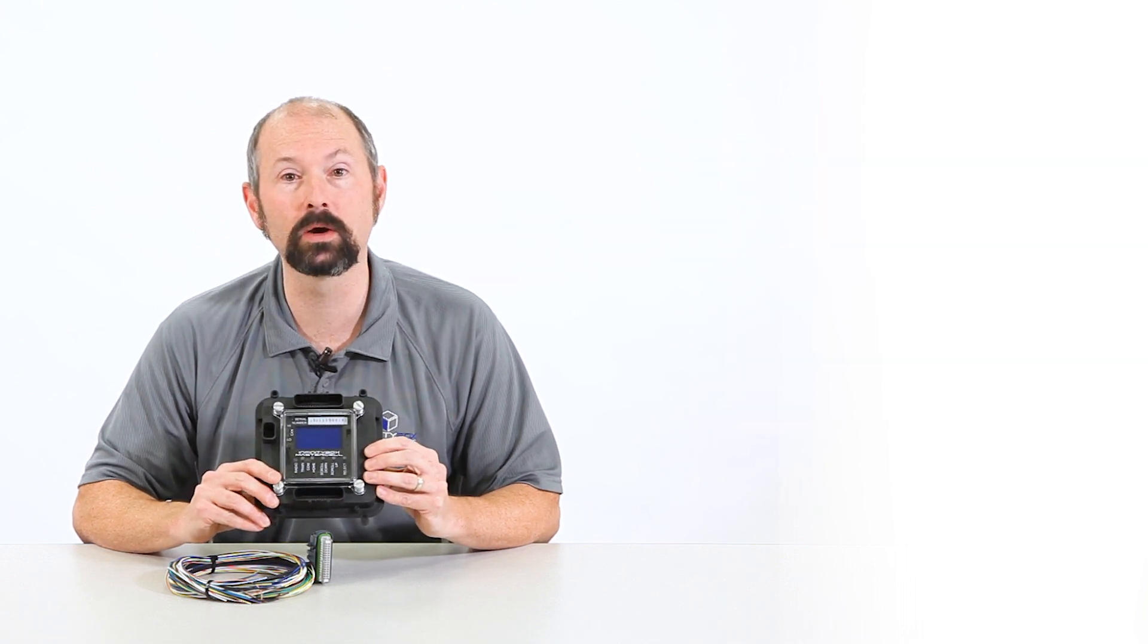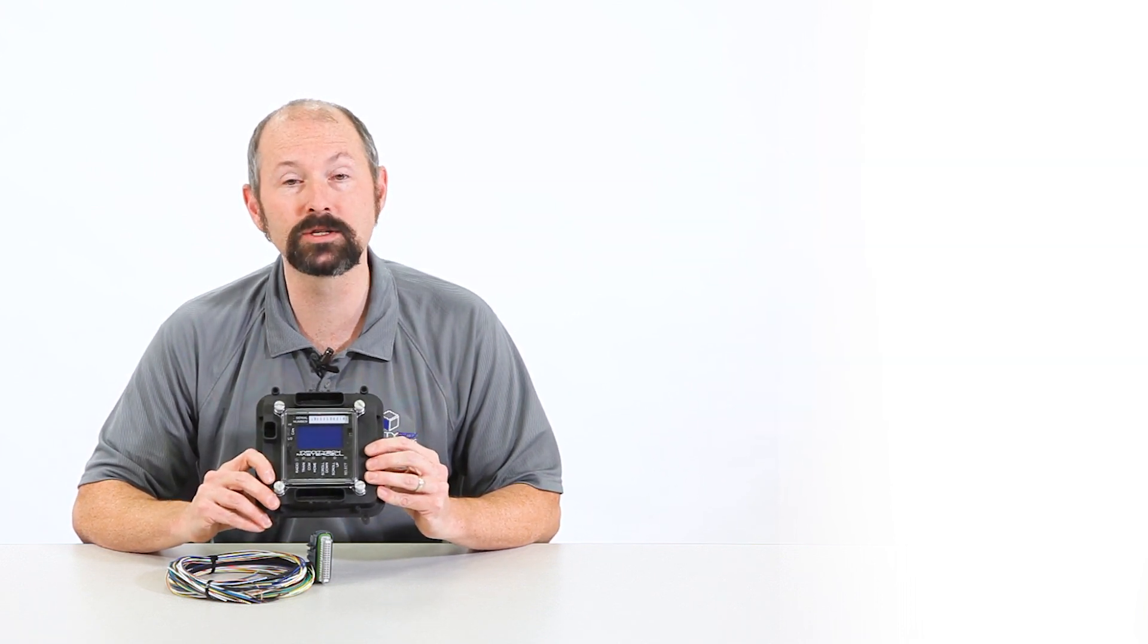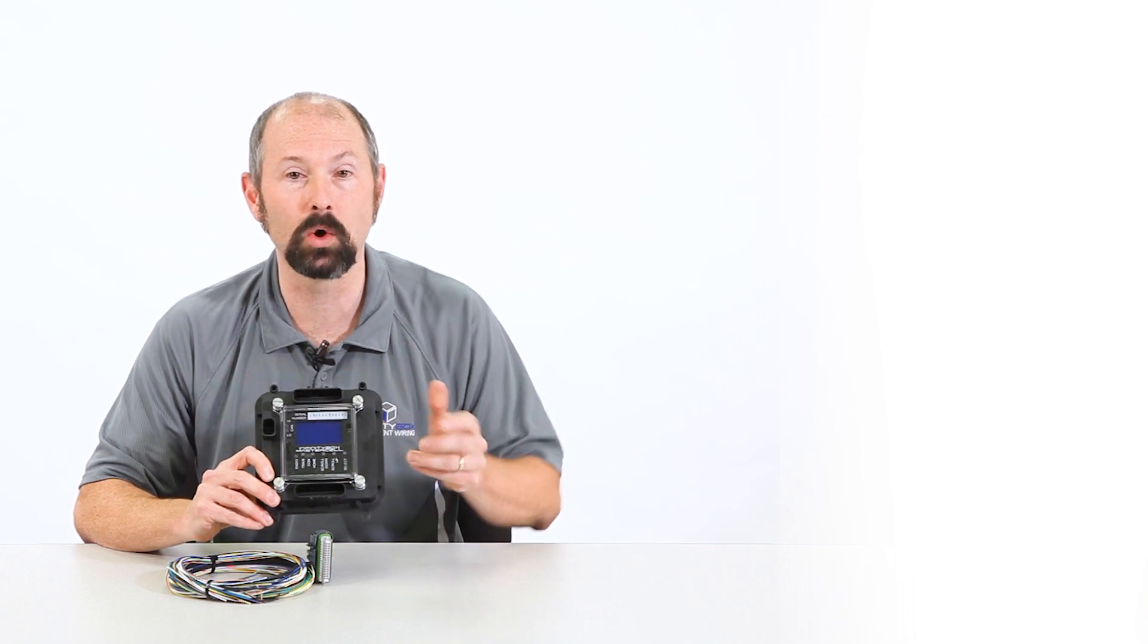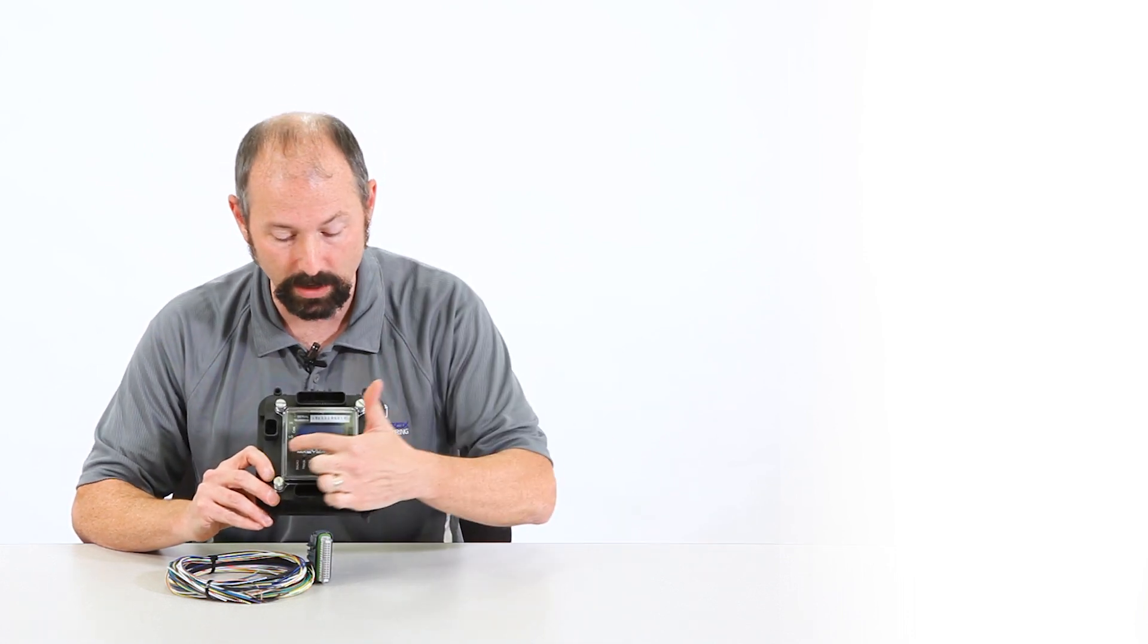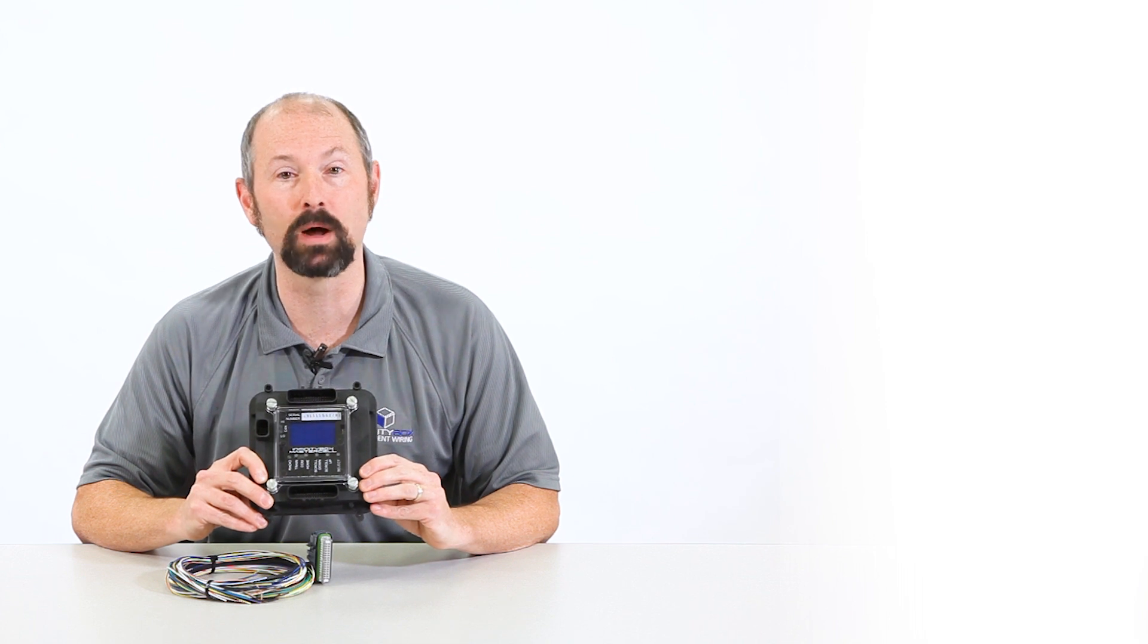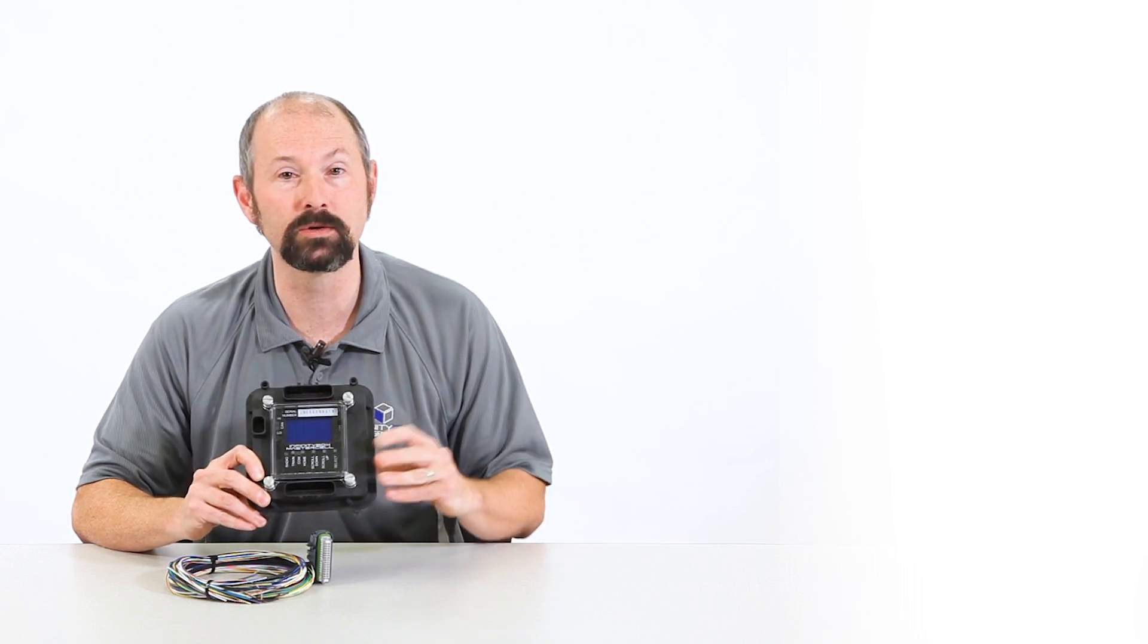Under the clear cover here is an LCD screen, and that screen visually, and in English, tells you everything that's going on in the InfinityBox system. And below that, there's a series of buttons that let you manipulate the menus on the screen.